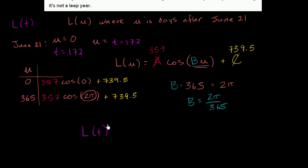L of T is equal to A, which is 357, times cosine of B, 2π over 365, times not U, but now we're going to write it in terms of T. We want to think about day of the year, not days after June 21st. So times T minus 172, and then finally plus our midline, plus 739.5. And we are done.